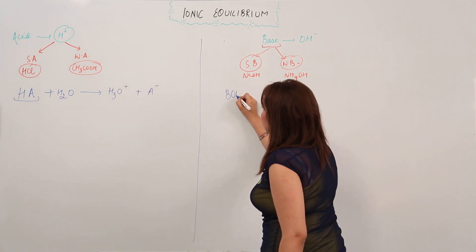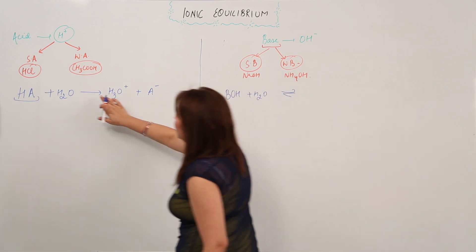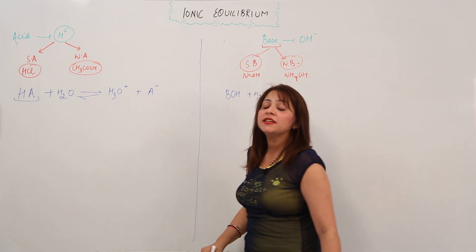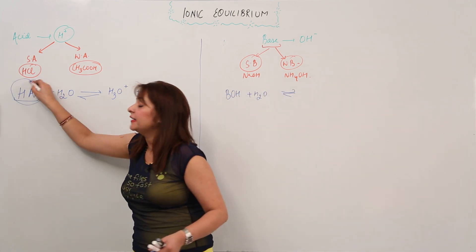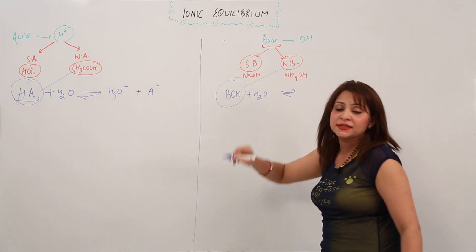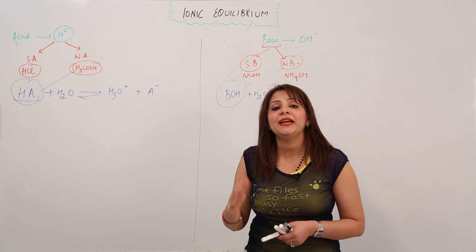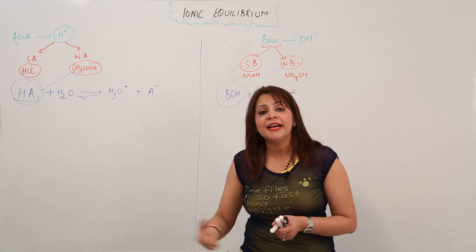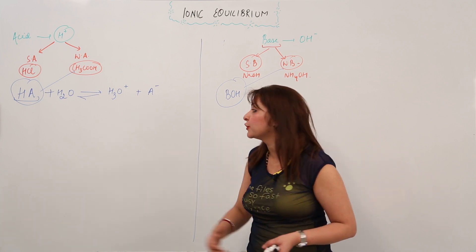Similarly, I have a base — dissolve it in water and there exists an ionic equilibrium. Here also there is an ionic equilibrium. In the case of weak acids, I have taken an example of a weak acid, and similarly this base is a weak base. In the case of weak bases or weak acids, there exists an ionic equilibrium between the ionized molecules, the ions, and the unionized molecules.